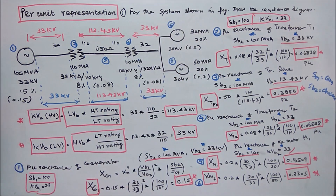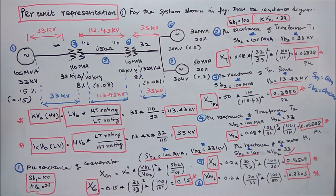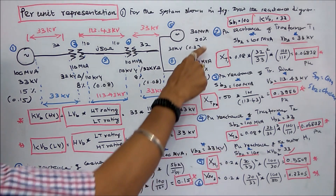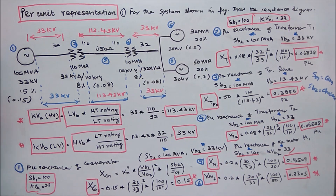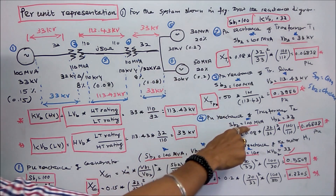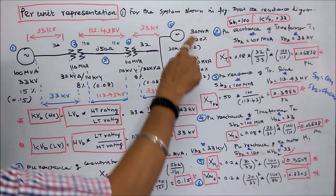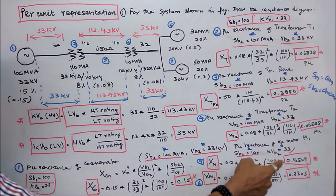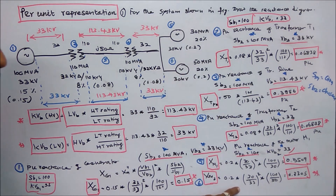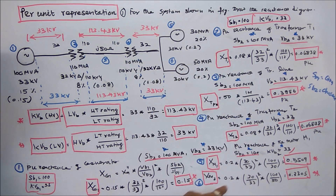The fifth is per unit reactance of motor 1, a 30 MVA motor. SB2 is 100, KVB2 is 33. Per unit reactance equals actual 0.2 into (VB1/VB2) squared, that is (30/33) squared, times SB2 100 divided by given 30. That equals 0.5509. Similarly for motor 2 (50 MVA given): 0.2 into (30/33) squared times 100/50, which equals 0.3305.